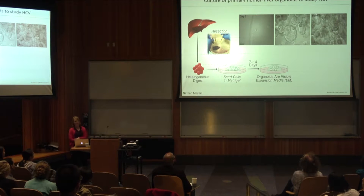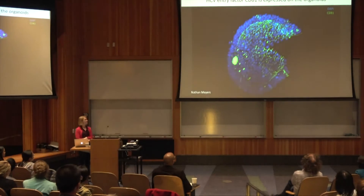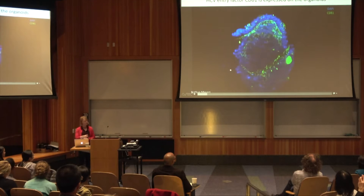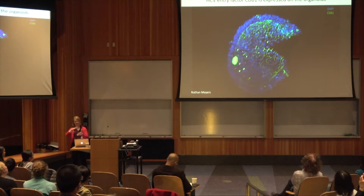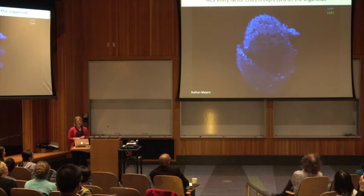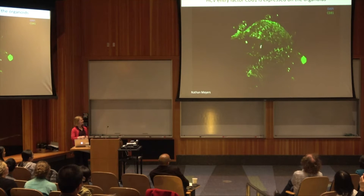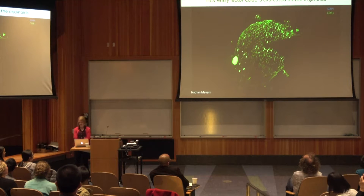We can passage them, split them up, freeze them down, and keep them in culture for about 3 months. This is a light sheet microscopy image of one organoid. They're a single layer of cells, DAPI in blue, and usually they're completely closed. These organoids do express HCV entry factors — here I'm showing in green CD81, one of the HCV entry factors. We've also looked by protein and qPCR for a number of HCV entry factors, so we assume these organoids are able to be infected by HCV.